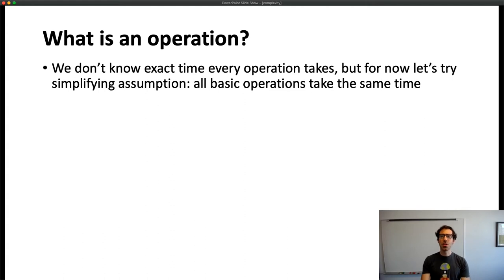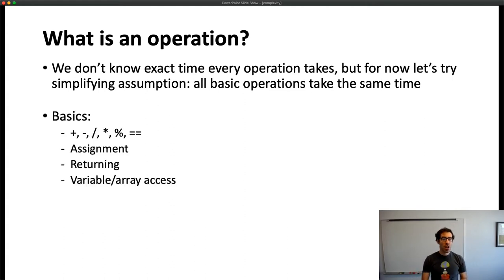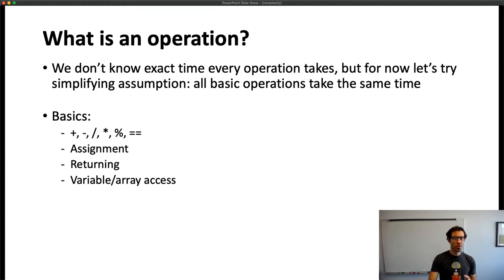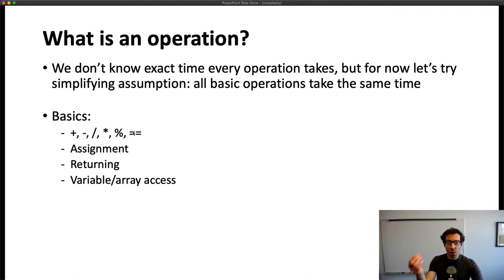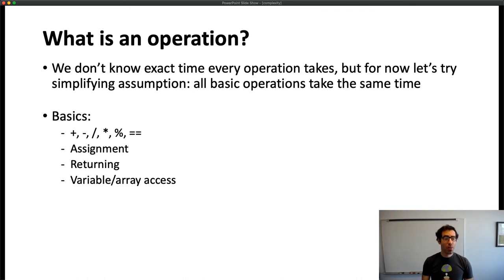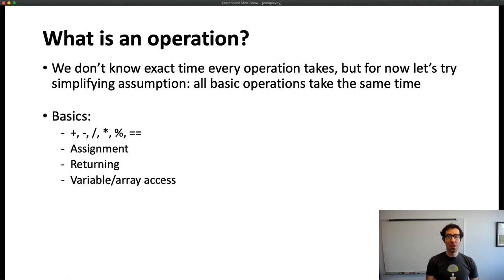One question is: what is an operation? We don't actually know the exact time every single operation takes — this depends on details of the system the code is running on. So we make a simplifying assumption that all basic operations take the same time. Basic operations include arithmetic (addition, subtraction, multiplication, division), conditional checks (equals, less than, greater than), assigning a value to a variable, returning a value from a function, and retrieving the value of a variable or array index.